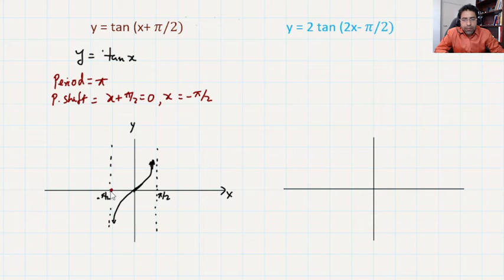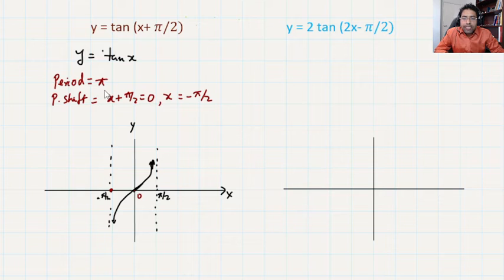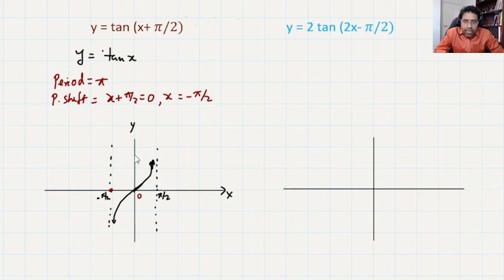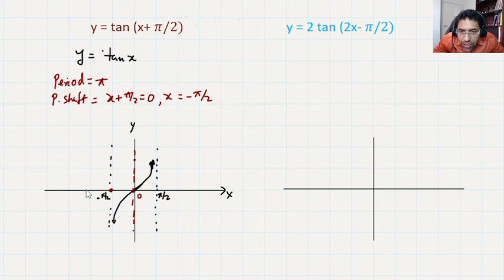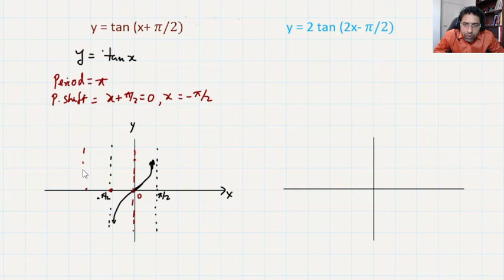It means it is starting from -π/2 instead of 0. Our period is the same, π. If it is starting from there, you know that the gap to the vertical asymptote is π/2, so here would be one vertical asymptote, and then another one in the negative direction here — so there is another vertical asymptote here.